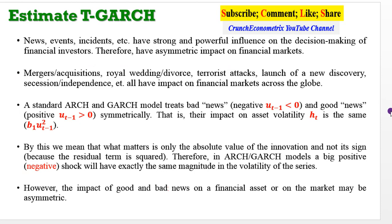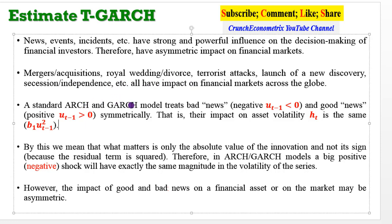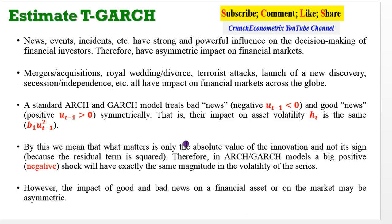Let's have a little background about the T-GARCH. Remember, news events and incidents all have strong and powerful influence on the decision-making of financial investors; therefore, they have asymmetric impacts on financial markets. Some of this news may be mergers and acquisitions, royal weddings or divorces, terrorist attacks, the launch of a new discovery, or secession and independence — they all have impacts on financial markets across the globe. A standard ARCH or GARCH model treats both good and bad news symmetrically.